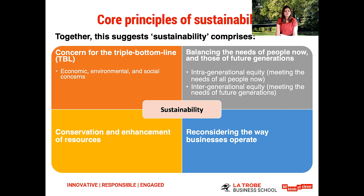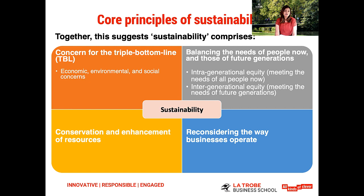Starting off with intergenerational equity, the idea behind this and the issue of fairness has to do with how decisions we make today are likely going to impact and reduce the ability of future generations to meet their own needs. Similarly, issues of equity also arise within current generations, such as equal and fair access to things like sanitation and healthcare. Sustainability is also about conserving and enhancing current resources we have, because we do live on a planet that's finite, and it's increasingly important to preserve and find better ways to use those resources.